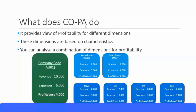So what is COPA and what does it do? It provides a review of profitability — you can analyze profitability for different dimensions. PA, or profitability analysis, belongs to the controlling module. You can analyze profitability for different dimensions, and these dimensions are based on characteristics.